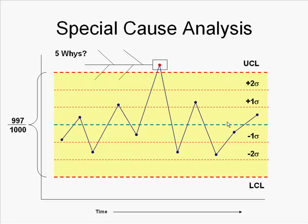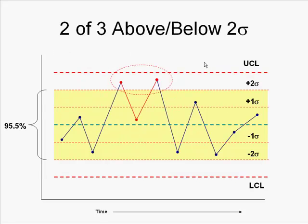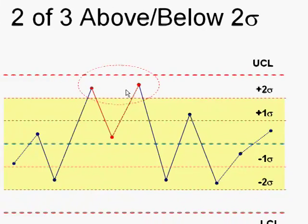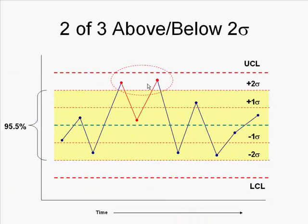Now, given that we have all these other lines, we can figure out some other potentially unstable conditions. So here you can see zone B. We should have 95% of our data points in there. But if we have two out of three above two standard deviations or below two sigma, then that's two thirds of your points. So two thirds are outside. That seems to be out of whack with our 95% in this zone.